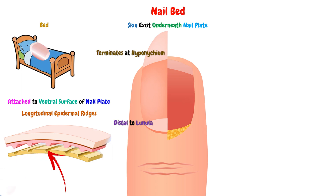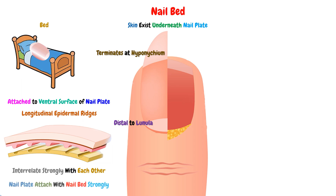These ridges will interlace strongly with each other. As a result, the nail plate attaches strongly with the nail bed, and this is one reason why the nail plate adheres so firmly to the nail bed.